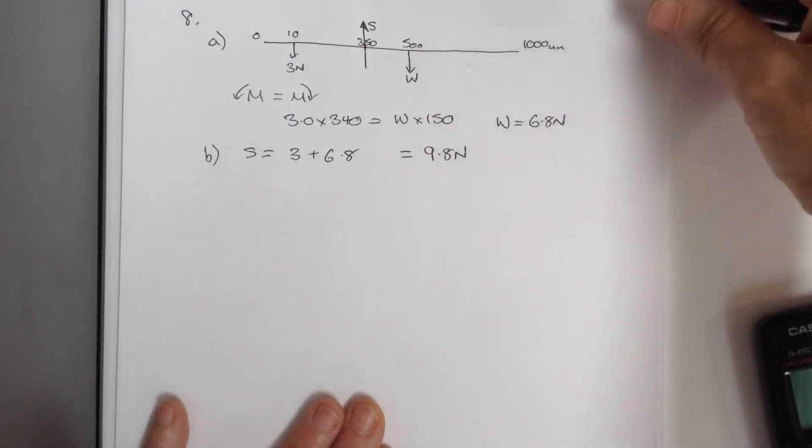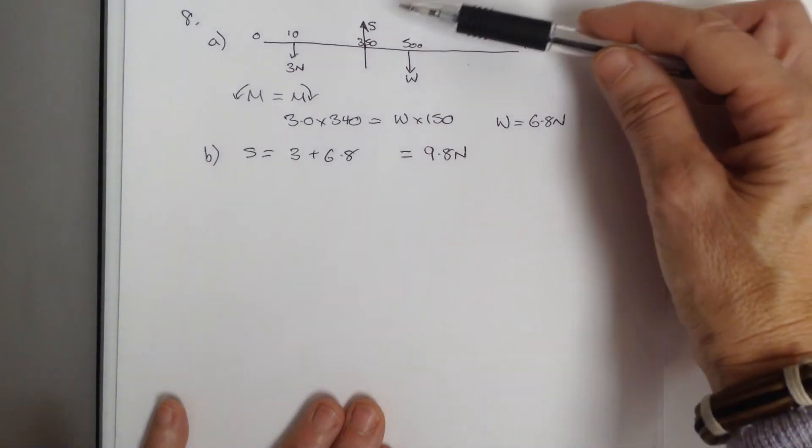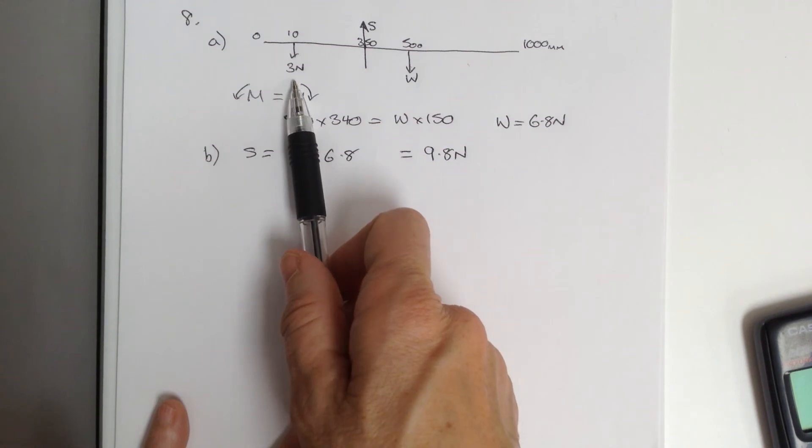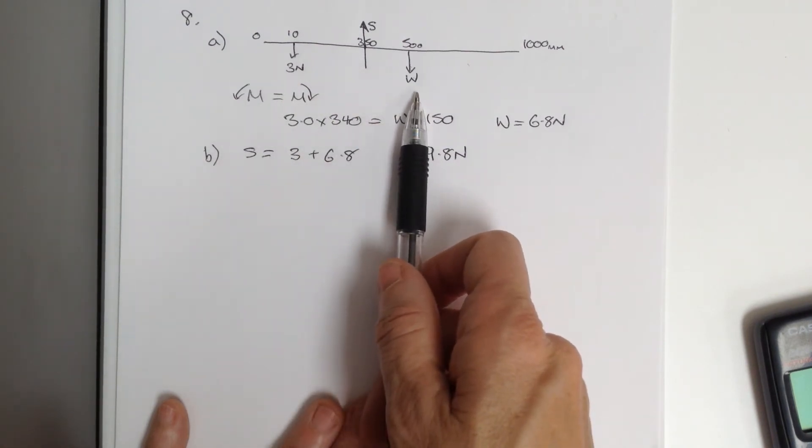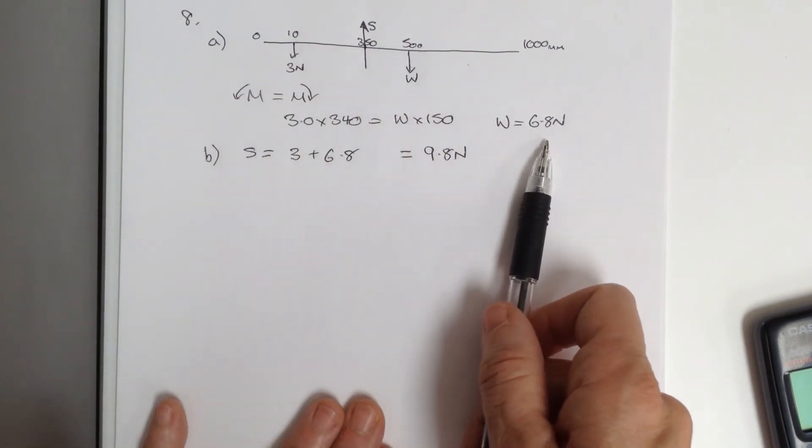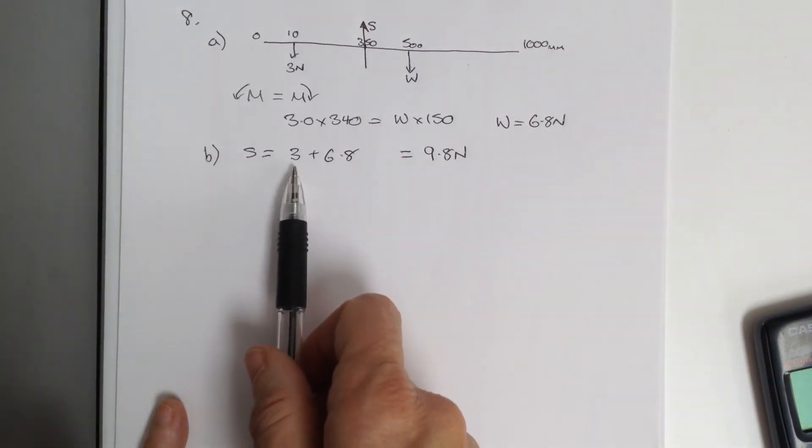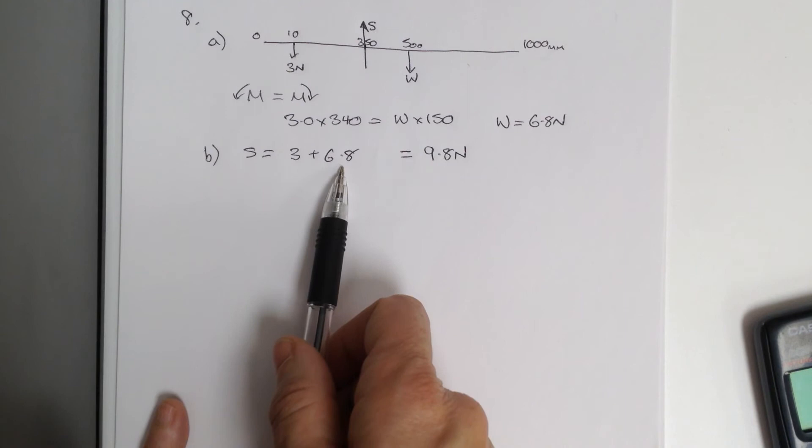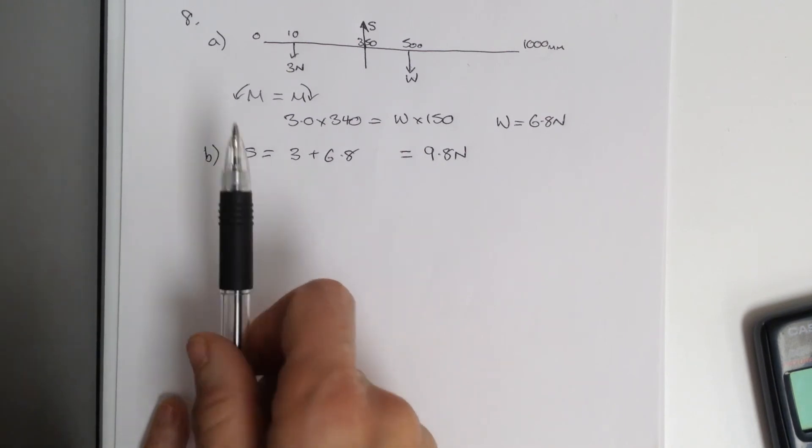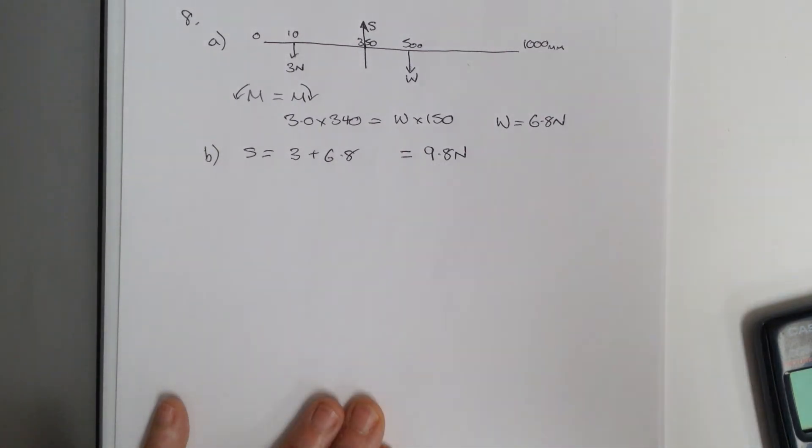Resolving vertically, we can see that the support force is balanced by the 3 newton weight and the weight of the rule, which we've just calculated. So, we can state that the downward force is 3 plus 6.8 must equal the upward force. So, the support force must equal 9.8 newtons.